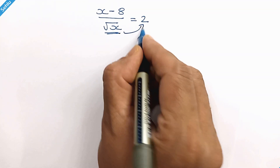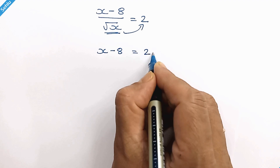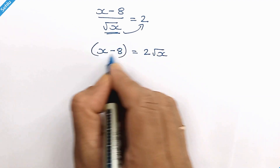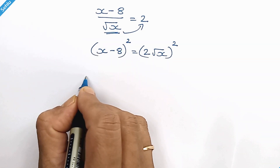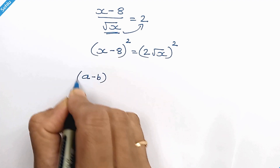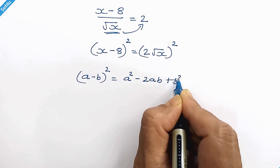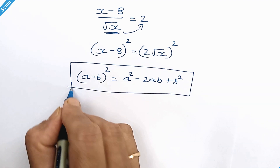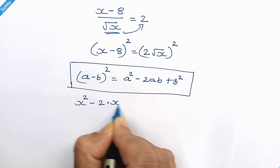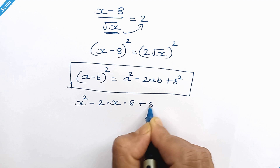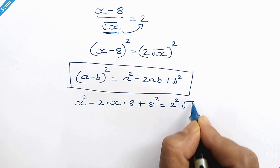Let's move square root x to the right-hand side, so it will be x minus 8 is equal to 2 times square root x. Squaring both sides — on the left-hand side we apply the identity (a minus b) squared equals a squared minus 2ab plus b squared. This gives x squared minus 2 times x times 8 plus 8 squared, equal to 2 squared times (square root x) squared.